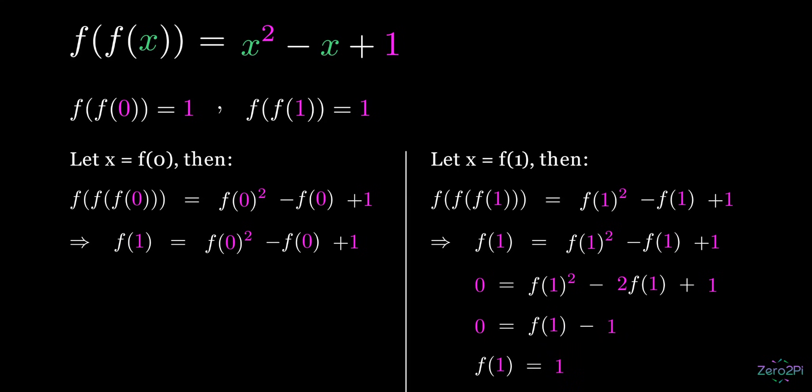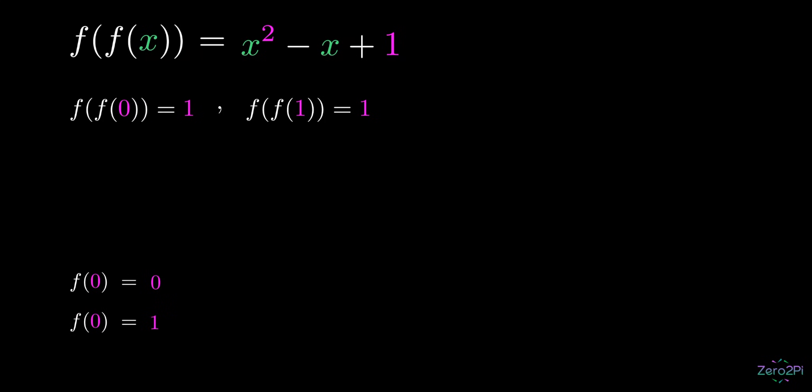Now if we plug this solution in the first equation, simplify like so, and factor, then we get two possible solutions: f of 0 equals 0 or f of 0 equals 1.